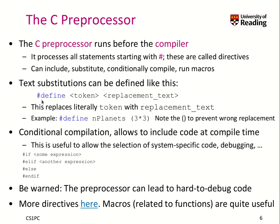Let's get started with text substitution. By saying `#define token replacement_text`, we literally tell the preprocessor to replace any time it sees the token, it shall be replaced with the replacement text. For example, we define N_PLANETS to be in brackets 3 times 3. Every time it sees N_PLANETS as one token, it will be replaced with this text. Note that it is not replaced with 9, so it doesn't do any kind of math evaluation — it really replaces the text literally.